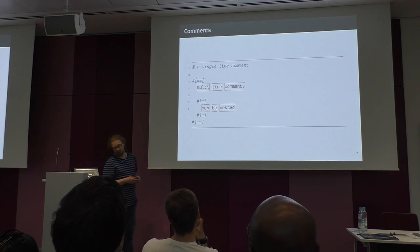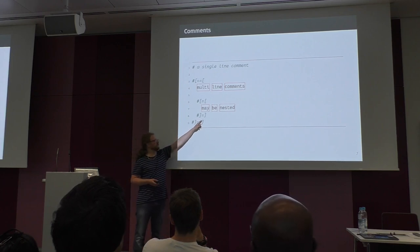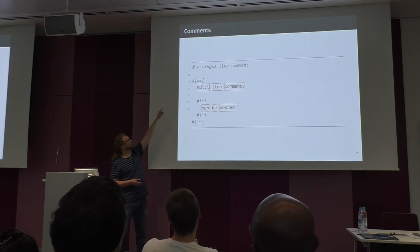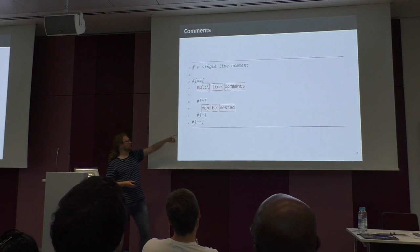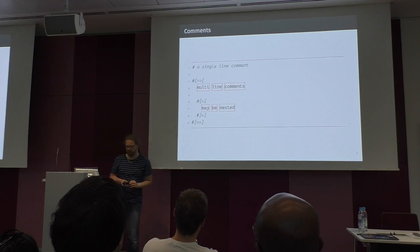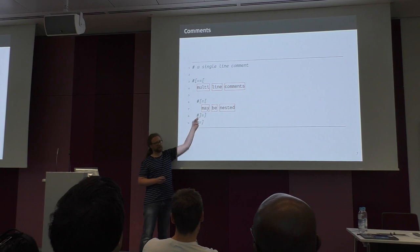Multi-line comments are introduced with hash, then a bracket, any number of equal signs, and another bracket. They terminate with a bracket, the same number of equal signs, and a closing bracket. This allows toggling a whole block with just one character. Multi-line comments can be nested if you use a different number of equal signs.